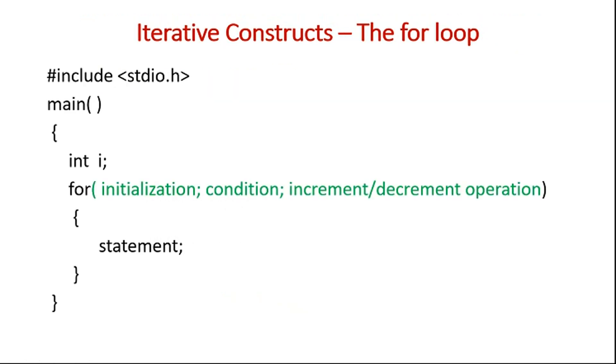And last type of the loop is nothing but the for loop. So it is also the iterative construct, the for loop. So in the for loop, general format of the for loop is like this. So in a syntactical way, it can be provided like, with the keyword for, in the round bracket, initialization, then semicolon.